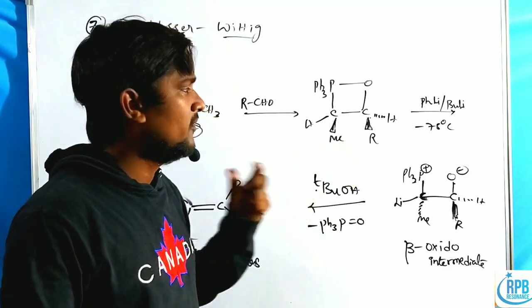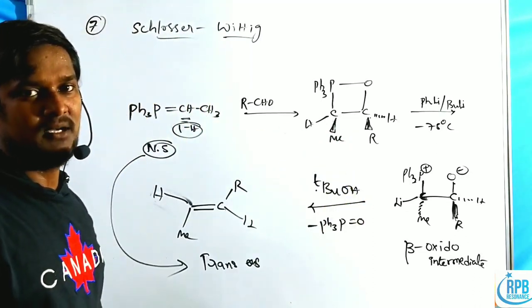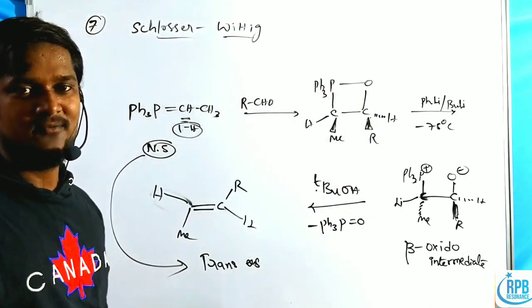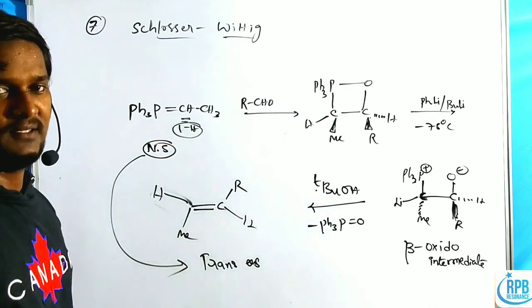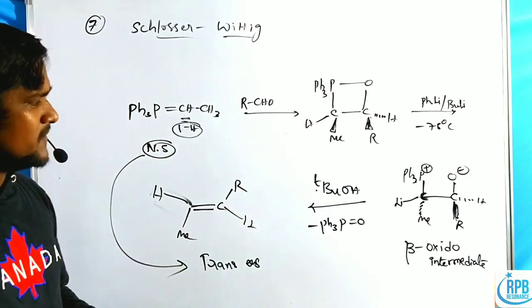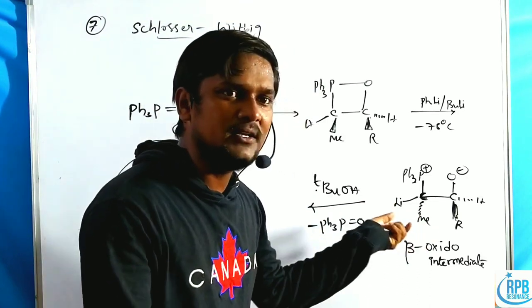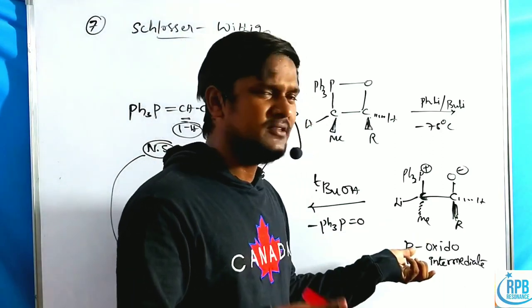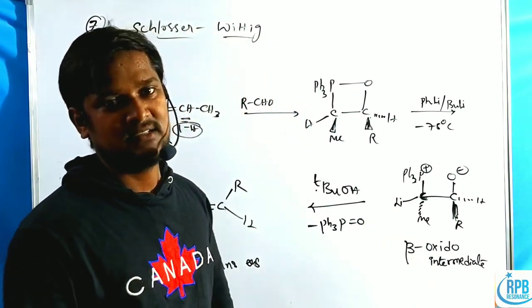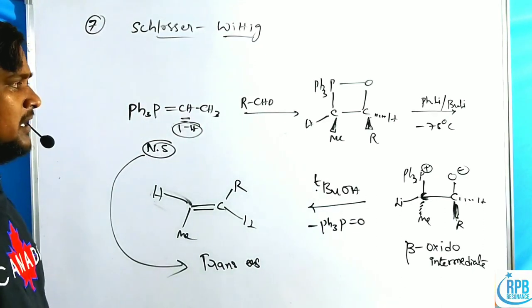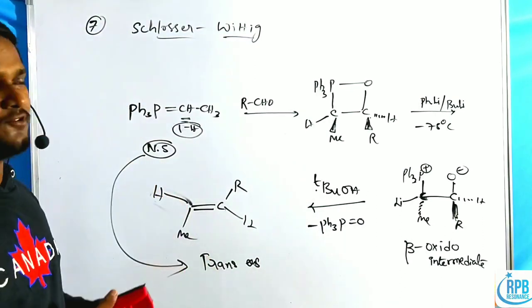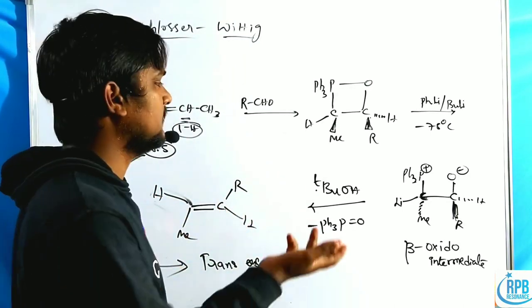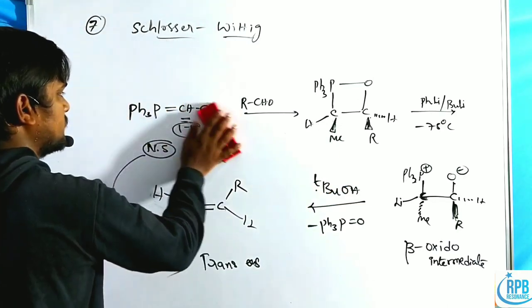This intermediate was confirmed by P-31 NMR spectroscopy, which clearly gives the mechanism we have already discussed in our previous lecture. Sometimes, when these beta-oxido intermediates are treated with electrophiles other than proton donors, they create very stereospecific trialkene intermediates. This is the general modification of the Schlosser-Wittig reaction — how to create tri-substituted olefins with the Schlosser modification.